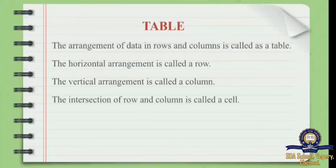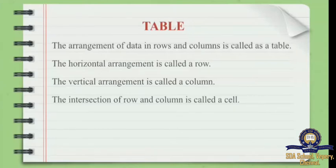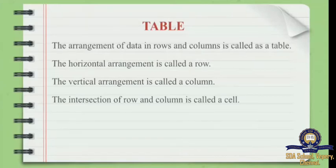What is a row? A row is a horizontal arrangement. A horizontal line is a sleeping line — when a line is lying down, it is called horizontal. If a line is standing, it is called vertical. A sleeping line is horizontal and a standing line is vertical. The horizontal arrangement is called a row, and the vertical arrangement is called a column.